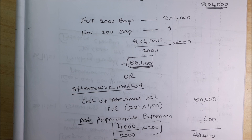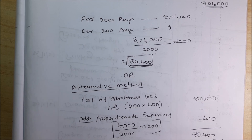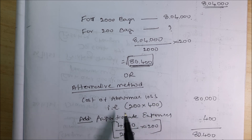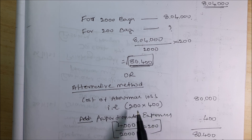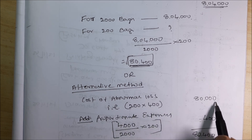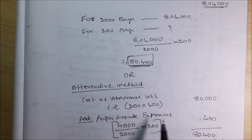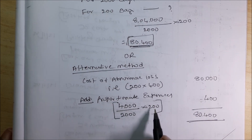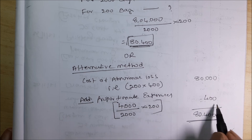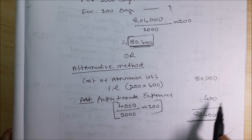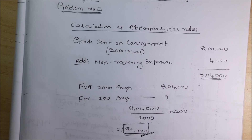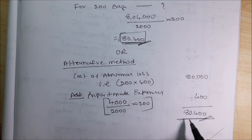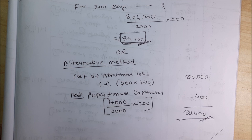Alternative method: Cost of abnormal loss = 200 × 400 = Rs 80,000. Proportionate expenses: for 2000 bags it is Rs 4,000, so for 200 bags = Rs 400. Total = 80,000 + 400 = Rs 80,400. In the first method Rs 80,400, in the second method also Rs 80,400 — both methods give Rs 80,400.